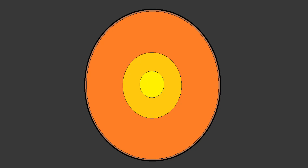As many of you already know, the earth has different layers. With the uppermost layer and the part we live on being the crust, under the crust we have the mantle, which makes up the largest part of the earth by volume, followed by the outer and inner core.